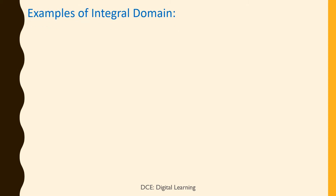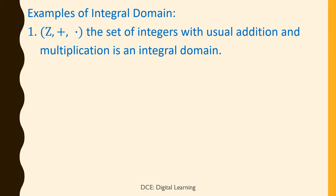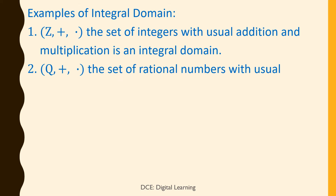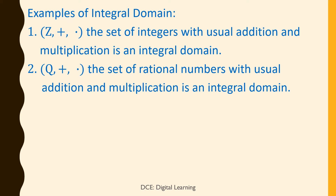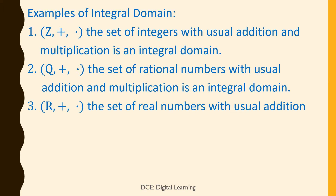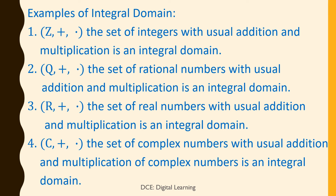Examples of Integral Domain. 1. Z (plus, dot), the set of integers with usual addition and multiplication, is an integral domain. 2. Q (plus, dot), the set of rational numbers with usual addition and multiplication, is an integral domain. 3. R (plus, dot), the set of real numbers with usual addition and multiplication, is an integral domain. 4. C (plus, dot), the set of complex numbers with usual addition and multiplication, is an integral domain.